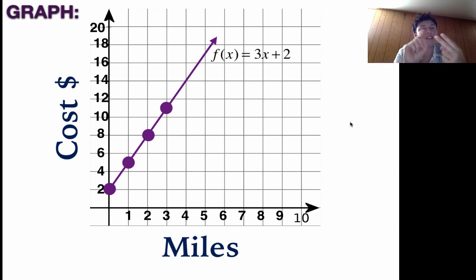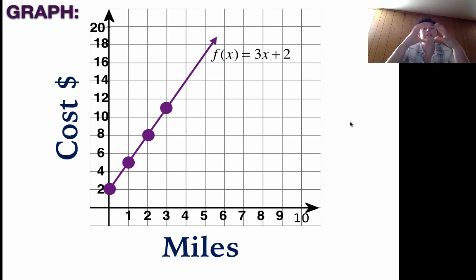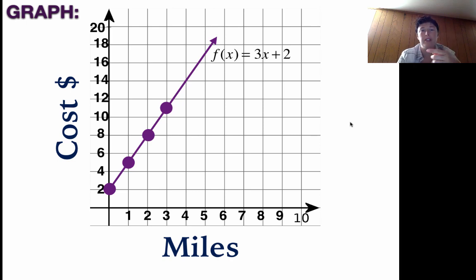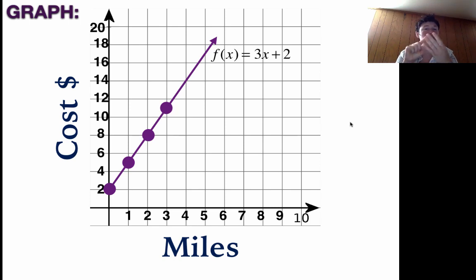Now we've got all four pieces: the story, the table, the function equation, and the graph. Having all four is what encompasses level four work on a test or quiz in class. You have to have a lot of detail and understand all four parts to get that level four. Hopefully you're taking that away from this video, and we're going to try one more example.